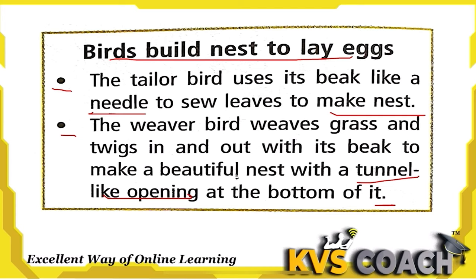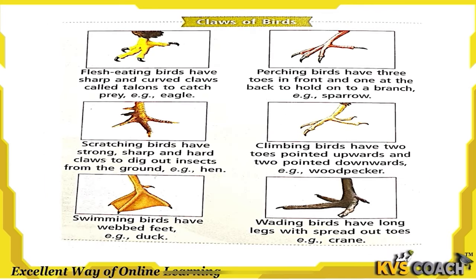Now let's look at the claws of birds. Flesh-eating birds have sharp and curved claws so that they can catch their prey in their talons easily. An example is the eagle, which has sharp eyes and can see its prey from high in the sky.